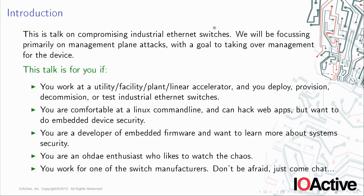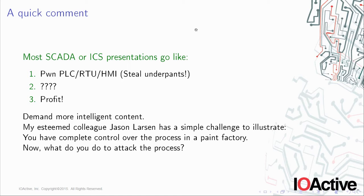A quick comment before we go on. You'll see quite a number of SCADA presentations, and some of them go like this: we own a piece of hardware, whether it be the PLC, the RTU, or some other piece of kit. Essentially, we steal your underpants, we do some magic, and we win. What we want to see here at IOActive is more intelligent content. Our colleague Jason Larson has a simple challenge: if you had complete control over the process of a paint factory, how would you go about attacking that process? Sometimes it's hard to really think about what — now that I have control — are the steps I can take to influence them.